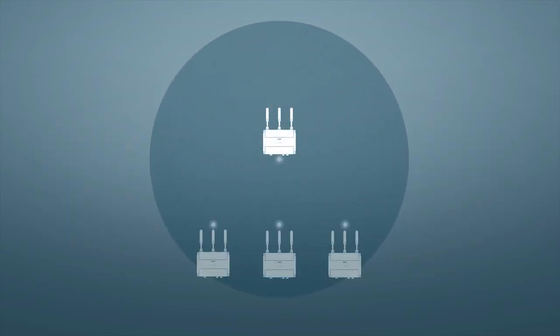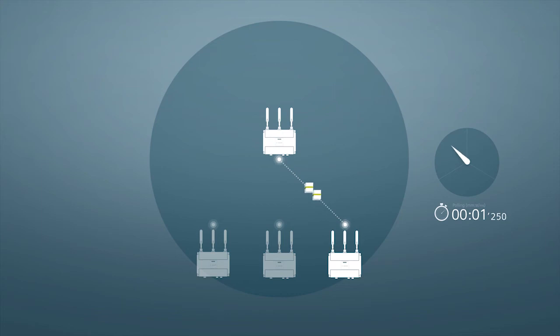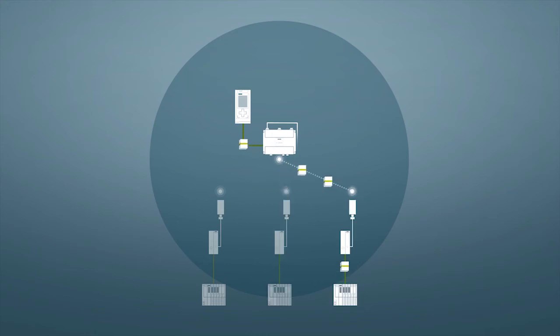The basic principle of IPCF is the cyclic polling of all clients through the access point. Each client has a reserved time window for data transmission. This also makes real-time communication via PROFINET possible. The data rate can be set flexibly or fixed, depending on the application.